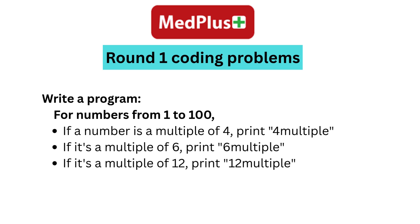Prepare standard coding questions and also revise Round 1 coding problems. Here are the coding questions asked in Round 1. Write a program: for numbers from 1 to 100, if a number is a multiple of 4, print '4 multiple'; if it's a multiple of 6, print '6 multiple'; if it's a multiple of 12, print '12 multiple'.